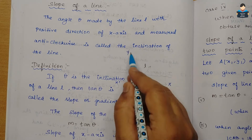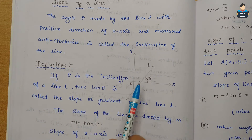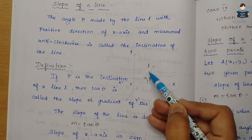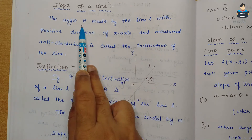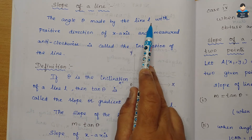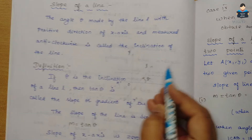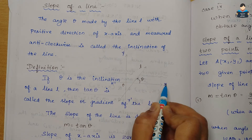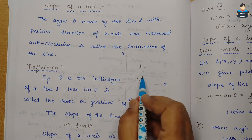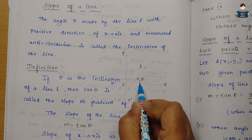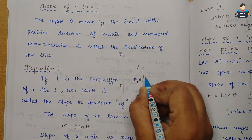Now we consider the slope of a line. Given coordinates x1, y1 and x2, y2, here the y values can be positive or negative. The slope of a line is the angle theta made by the line L with the positive direction of the x-axis, measured anti-clockwise. This is called the inclination of the line.